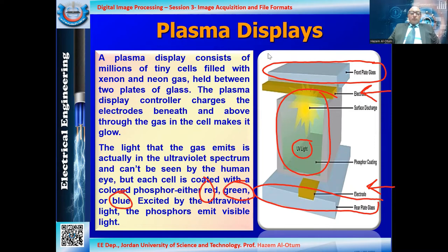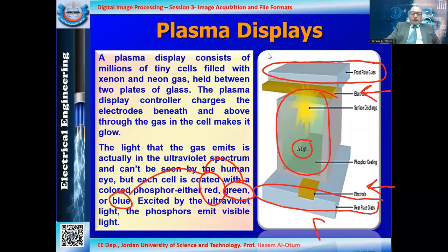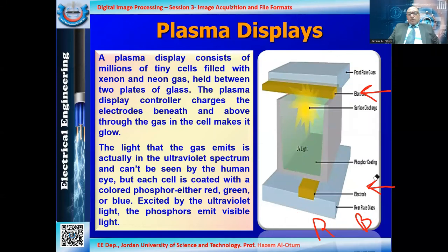When ultraviolet light hits the phosphors, they emit light according to the strength of the incident light and the charge applied by the electrodes. Combining the three RGB filter types gives us true color output. Plasma displays are now losing market interest and are very rarely found, because they consume relatively high electric power compared with newer display types.